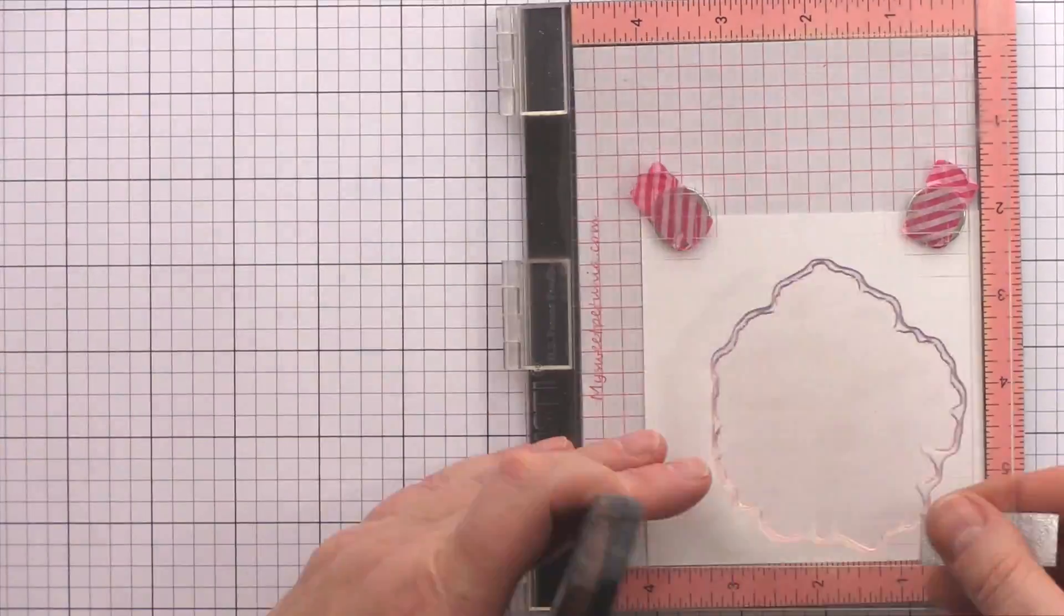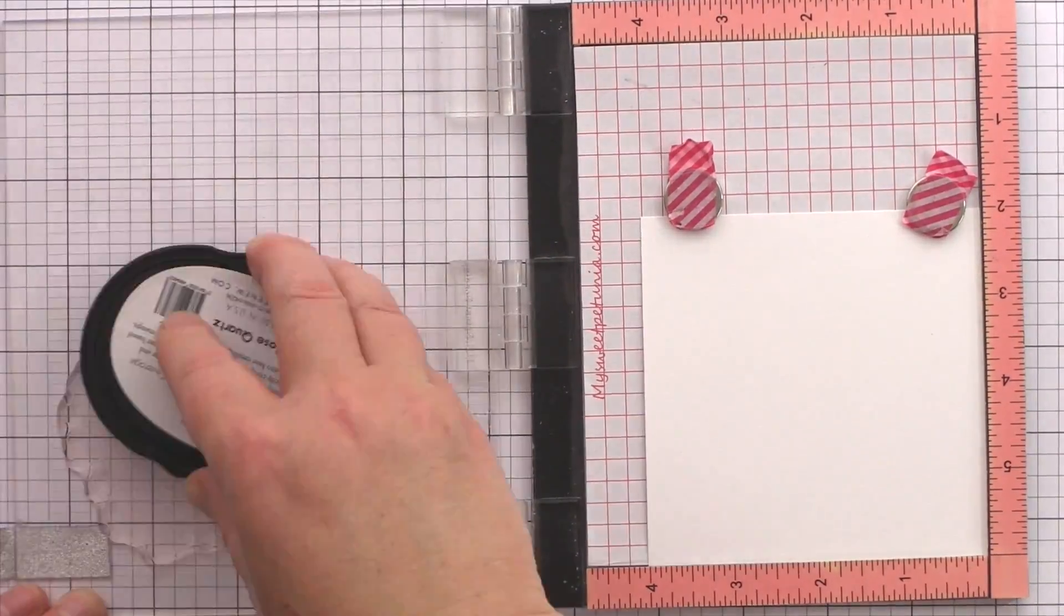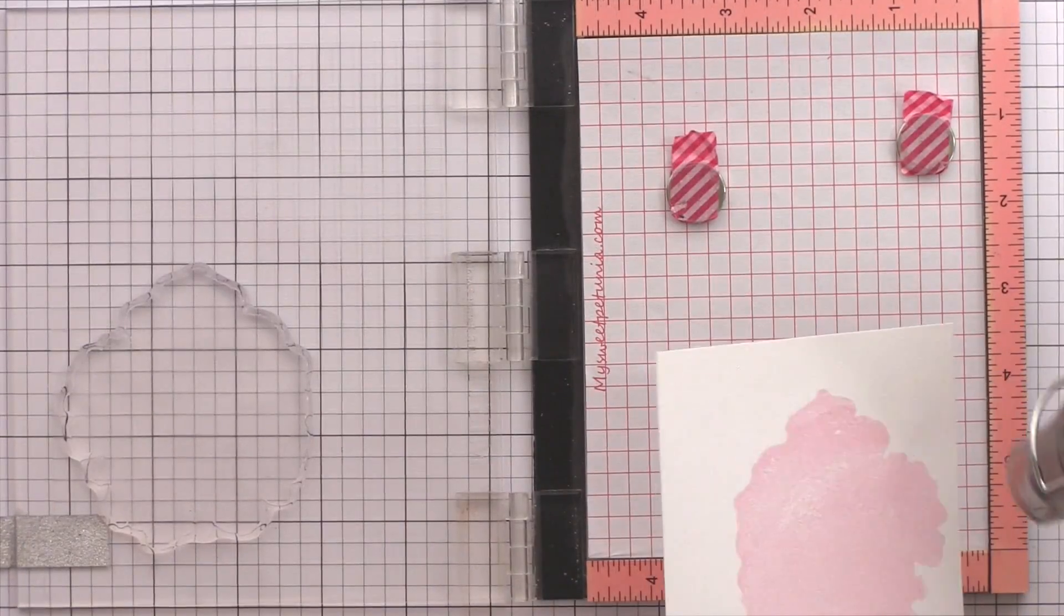The trick when stamping multiple images is to make sure the card is positioned in the same place in the MISTI each time. The easiest way to do this is to tuck the card into the corner and make sure you do that each time you stamp.